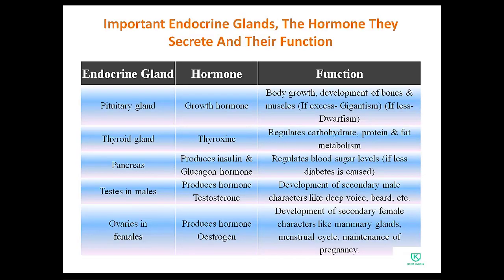Now we will look at some important endocrine glands, the hormones they secrete, and their functions. All endocrine glands are ductless — they secrete directly into the bloodstream. The first endocrine gland is the pituitary gland, which releases the growth hormone (GH). Its function is body growth and development of bones and muscles.